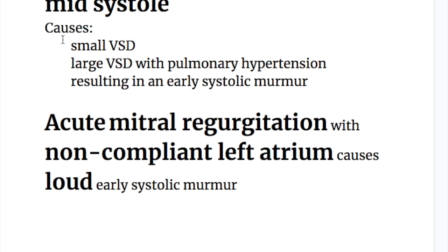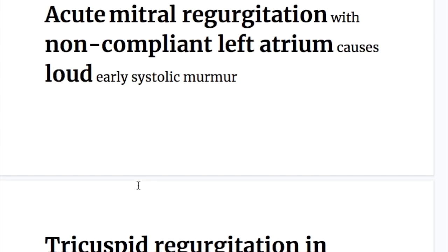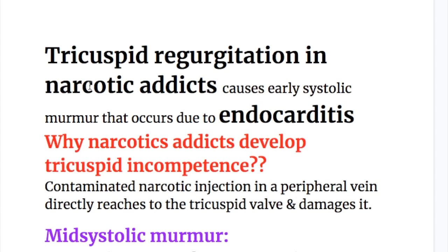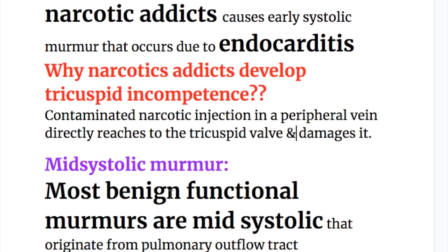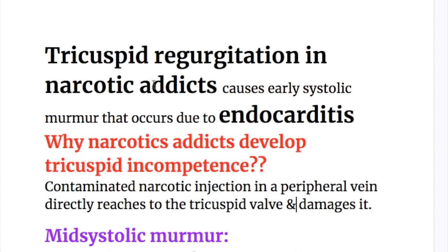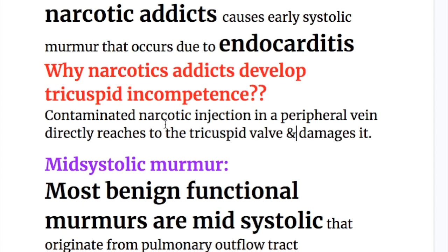The causes of ejection systolic murmur: first, ventricular causes — small VSD or a large VSD with pulmonary hypertension result in ejection systolic murmur. Second, acute mitral regurgitation with non-compliant left atrium causes a loud early systolic murmur. Third, tricuspid regurgitation in narcotic addicts causes early systolic murmur due to endocarditis, because contaminated narcotic injection in a peripheral vein directly reaches the tricuspid valve and damages it.